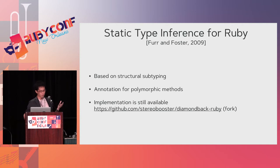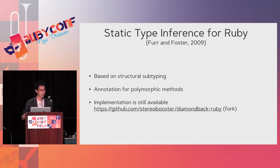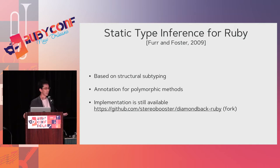To support that duck typing semantics, I'd like to introduce a paper: 'Static Type Inference for Ruby,' published in 2009 by Professor Foster and his students. It is based on structural subtyping and needs annotations for polymorphic methods. I found one week ago that the implementation is still available on GitHub, so you can try to build the tool called DiamondbackRuby.